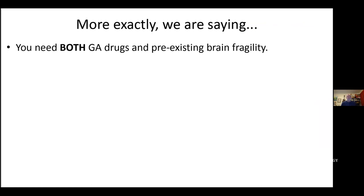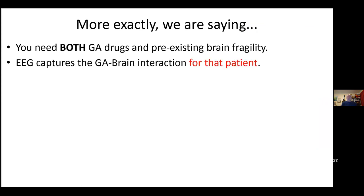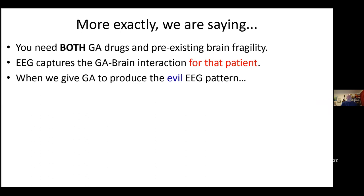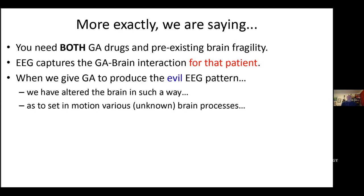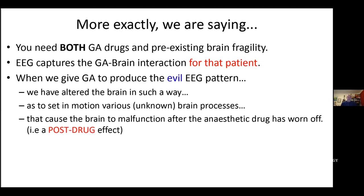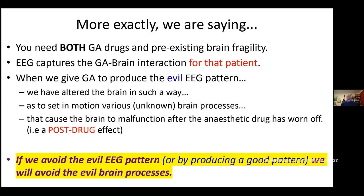To summarise: you need both the anaesthetic drugs and some sort of pre-existing vulnerability of the brain in order to get the post-operative delirium state. We are hoping that the EEG captures that interaction for that particular patient — that when we give anaesthesia causing a bad pattern, we've somehow changed the brain and set in various brain processes so that the brain is not functioning very well, even though the anaesthetic drug level is now zero. We're looking for a post-drug effect. The corollary is: if we can avoid this pattern or produce a good pattern, we will avoid this whole process. That's the null hypothesis these studies are based on.